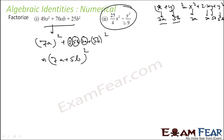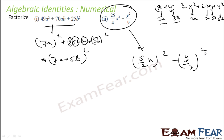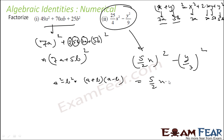Next, (5/2·x)² − (y/3)² is of the form a² − b², which equals (a+b)(a−b). So this factors as (5/2·x + y/3)(5/2·x − y/3).